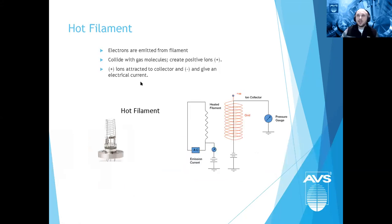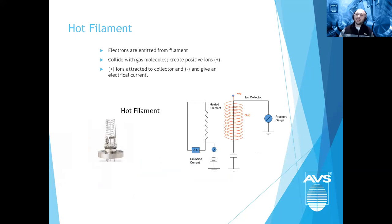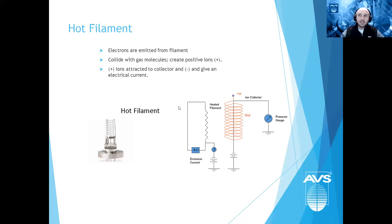The hot filament ion gauge has a heated filament — tungsten, yttria-coated iridium, or thoria-coated iridium — through which current is sent to emit electrons. These electrons bombard neutral gases, ionizing the gas particles. The ions are collected on the collector (thin wire), producing a current that indicates pressure. For cold cathode gauges, there's no filament — instead, internal magnets and an internal plasma (ignited by an ignition aid) are used, similar conceptually to a sputtering process with electron bombardment.